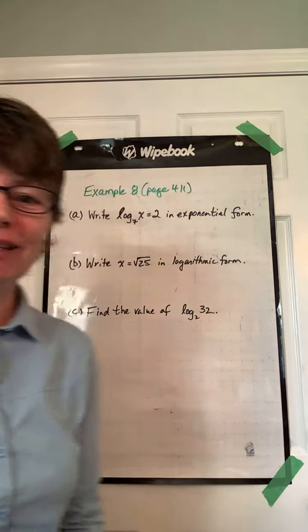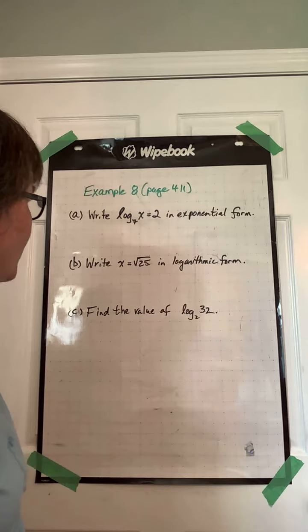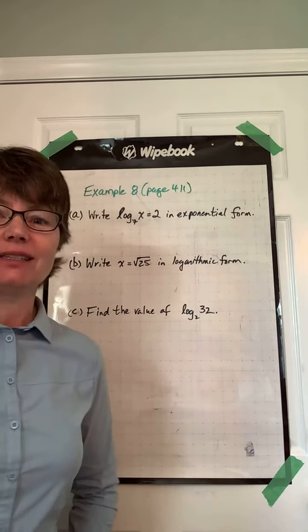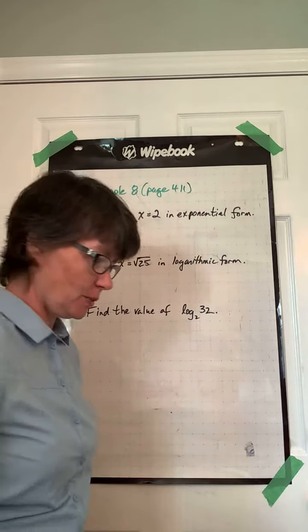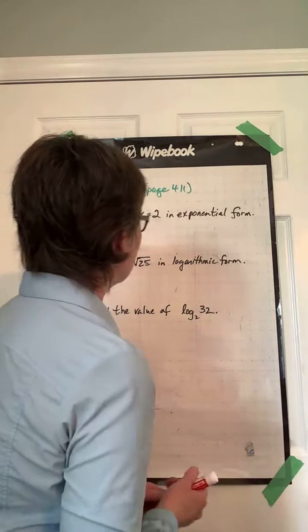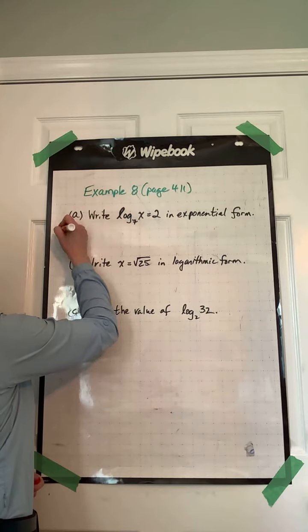Here we go, doing example 8 from page 411. Write log base 7 of x equals 2 in exponential form, so we need to be remembering how this works.